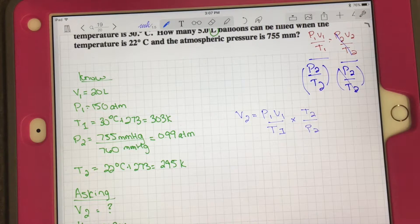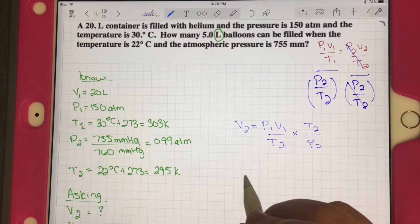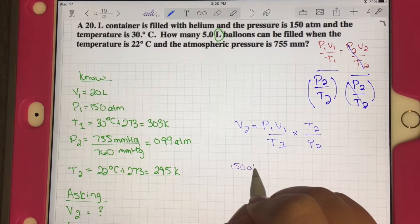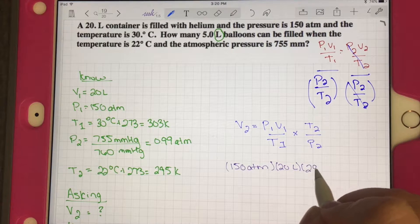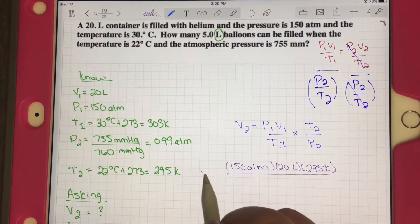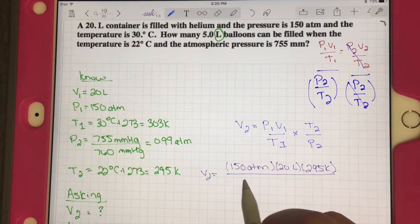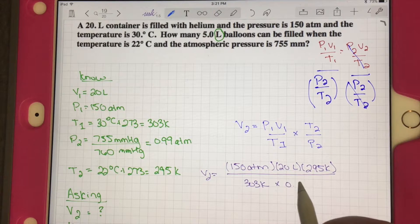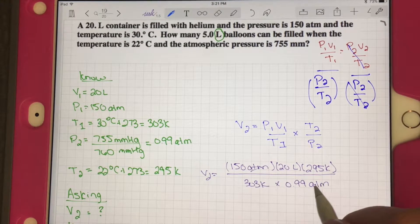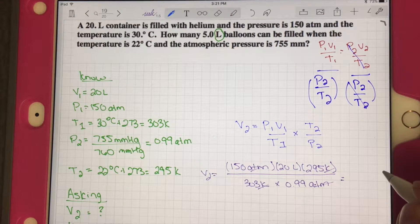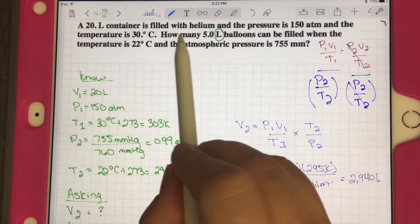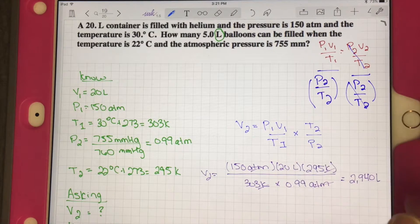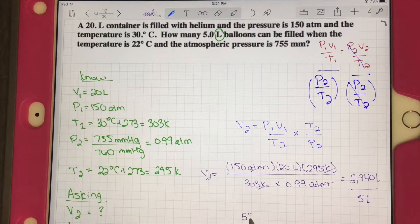Now we just have a plug-and-chug. We have 150 ATM times 20 liters times T2 295 Kelvin divided by 303 Kelvin times 0.99 ATM should leave us with liters. That should be around 2,940 liters for V2. It asks us how many 5 liter balloons can be filled, so we have to divide this by 5 liters. That should be about 588 balloons.